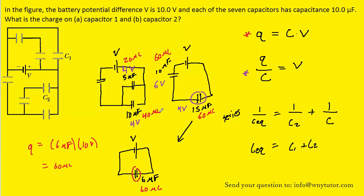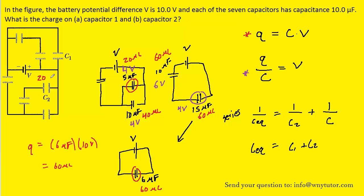Finally, we move backwards from the 5 microfarad capacitor to the two it came from: C2 and the unmarked capacitor. Since we're moving backwards to a series arrangement, we bring with us the charge. The charge on the equivalent was 20 microcoulombs, so the charge on C2 is 20 microcoulombs — which is indeed the correct answer to part B.